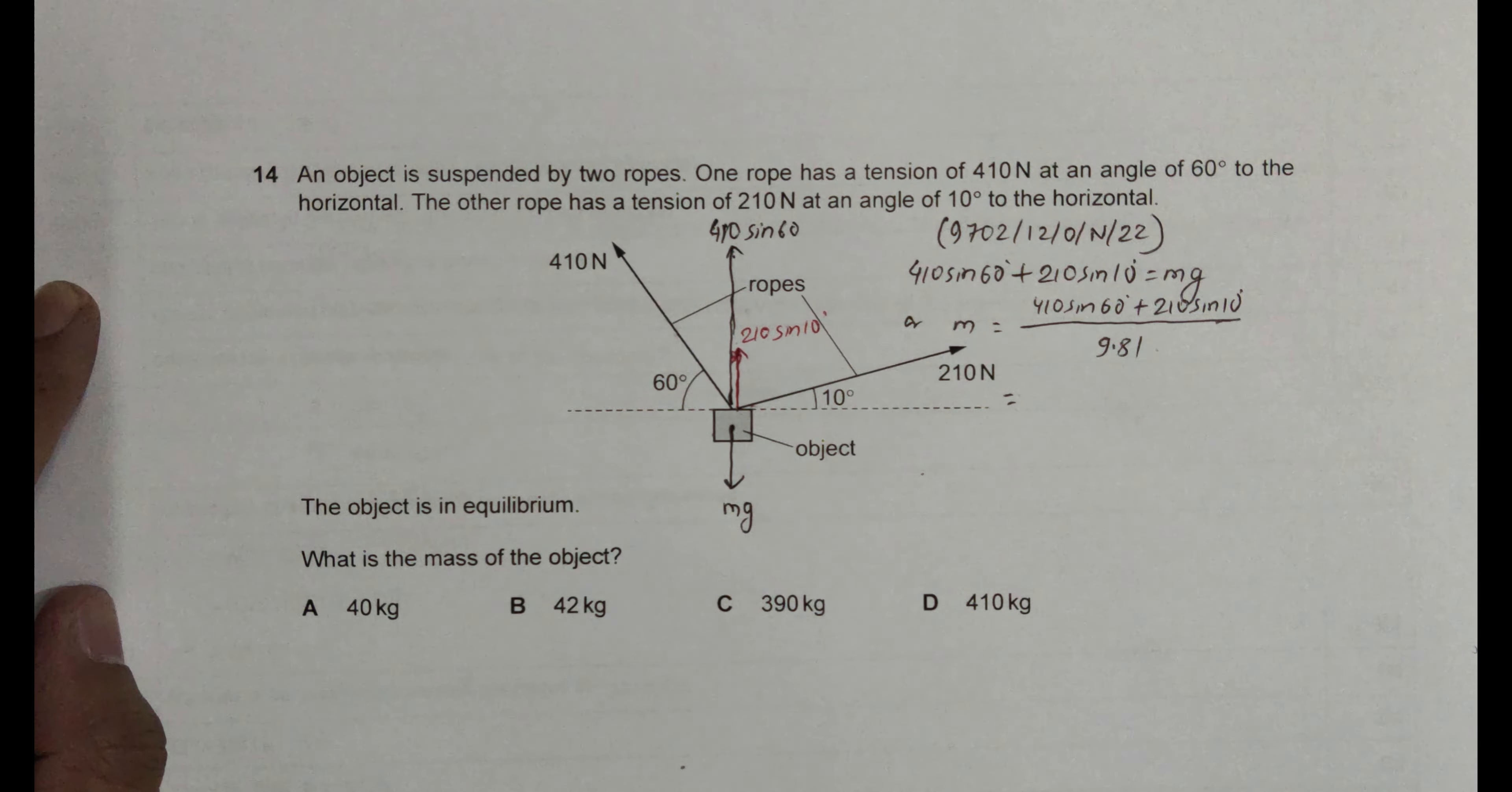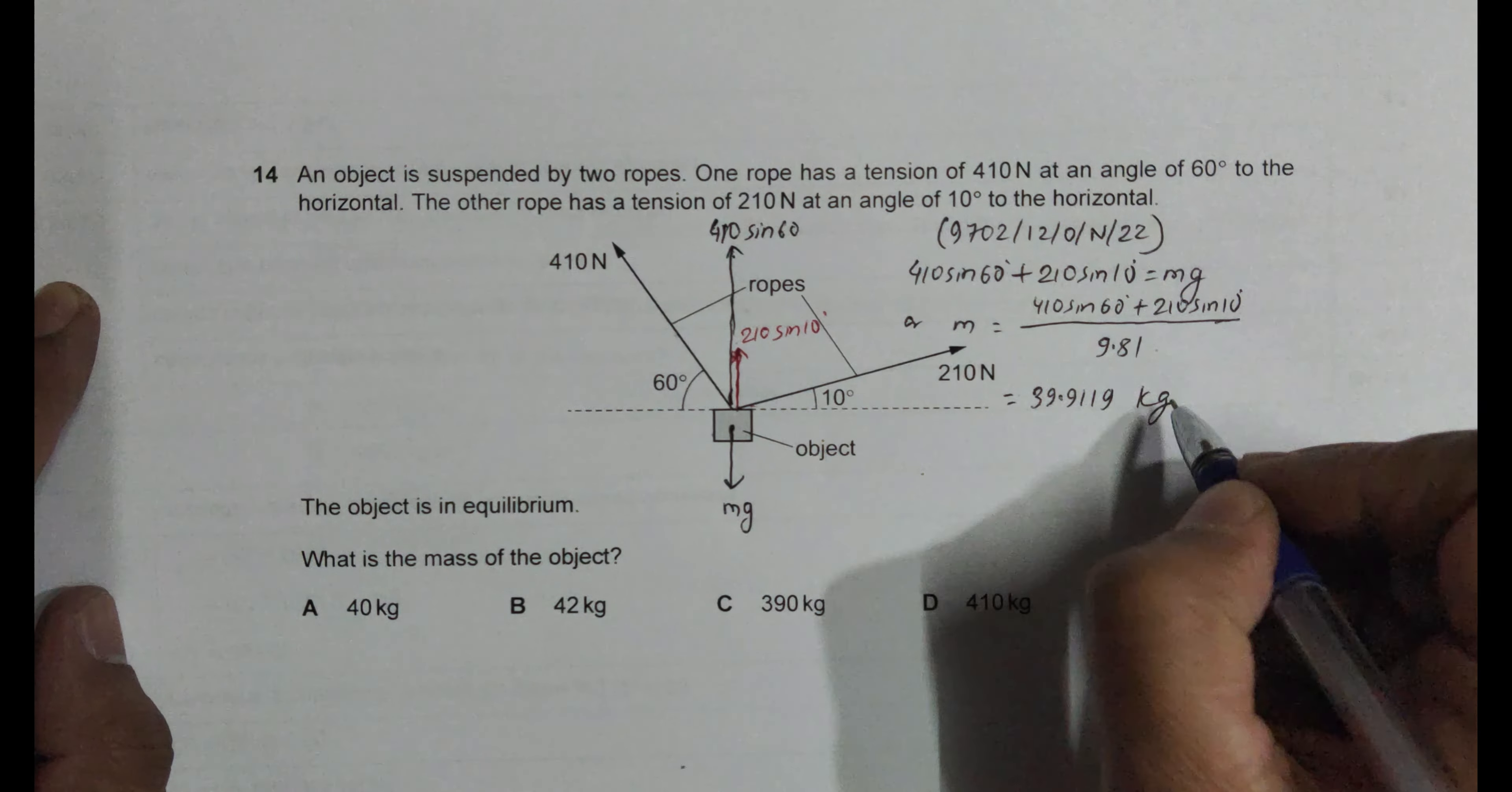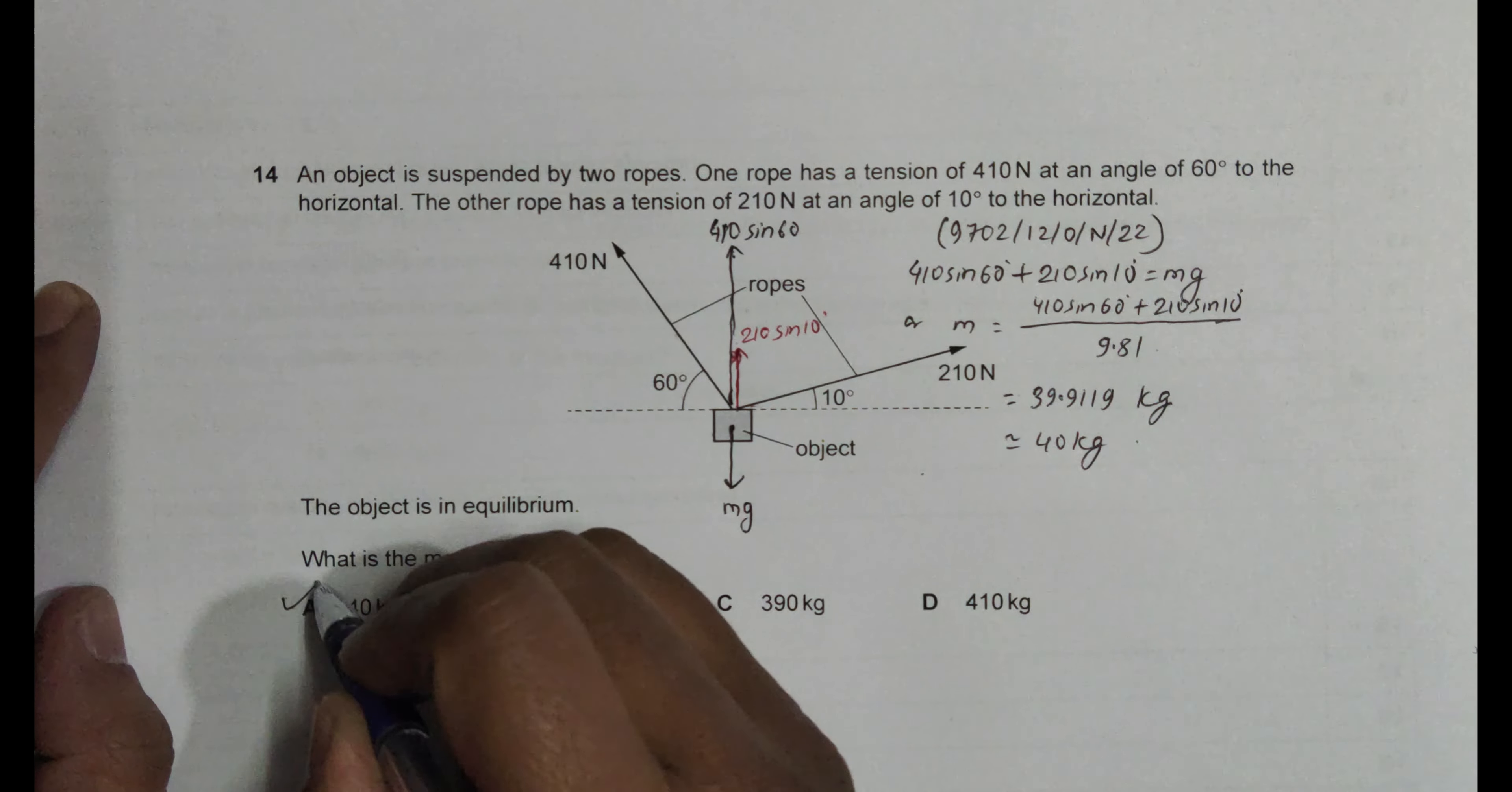So it gives us 410 sine 60 plus 210 sine 10, divided by 9.81. So this comes equal to 39.9119 and so on kg, and its nearby value is equal to 40 kg. And this value is available in choice number A. So choice number A should be the correct choice.